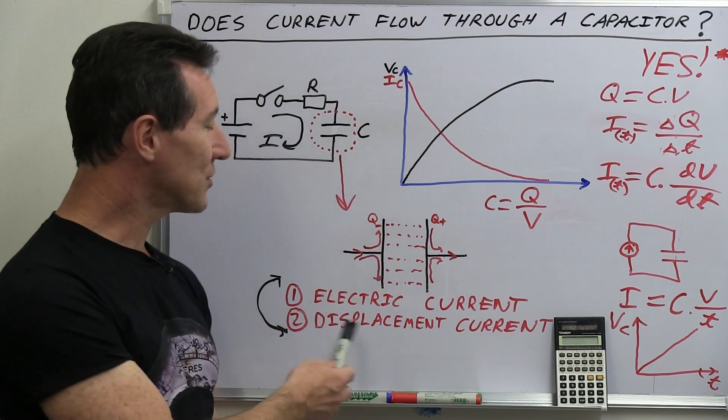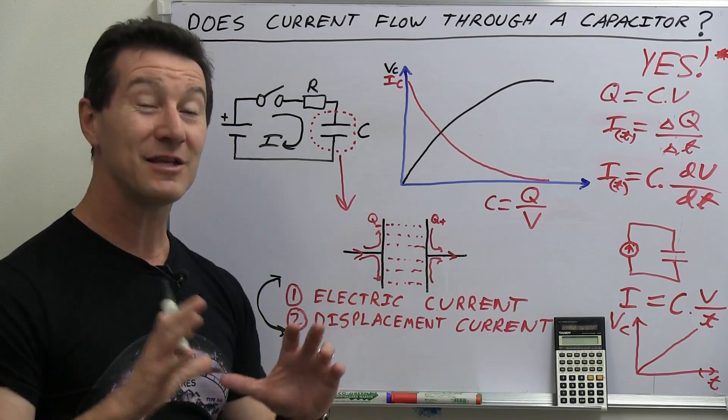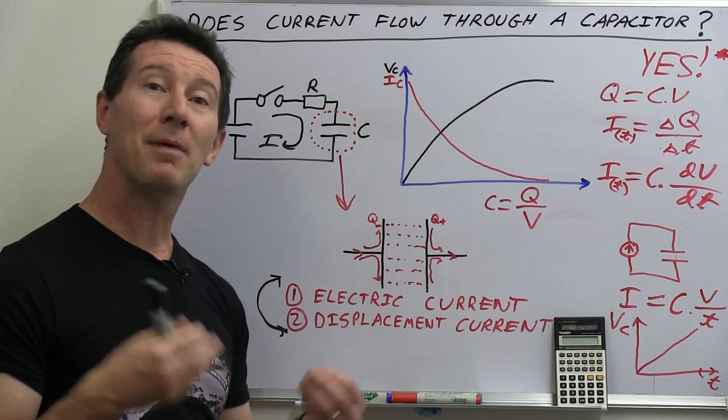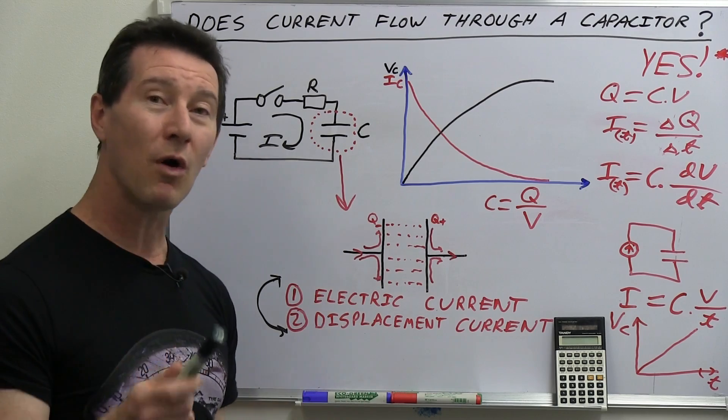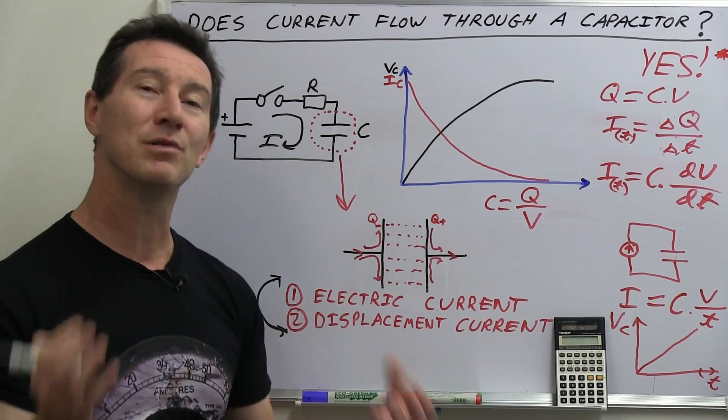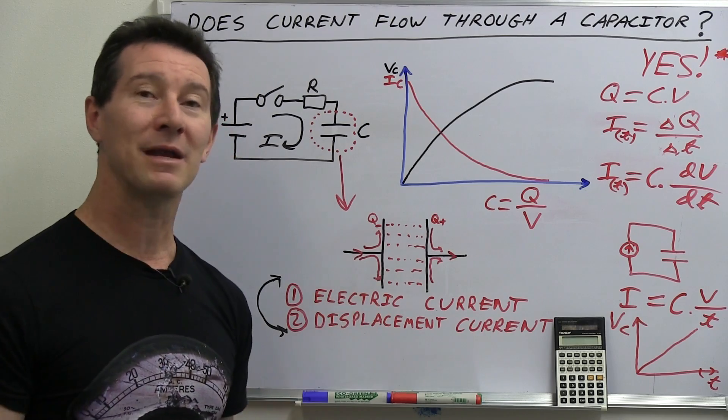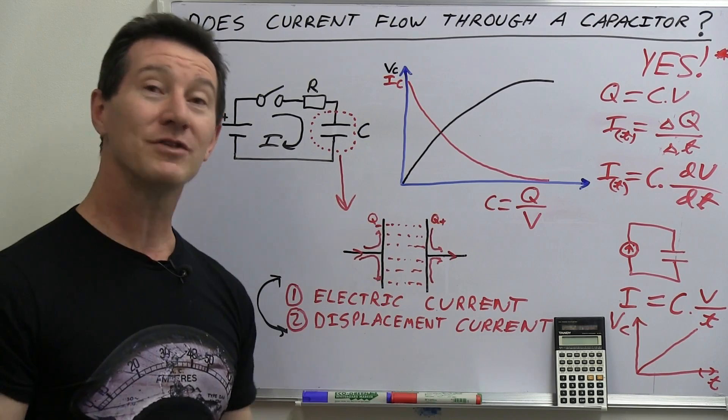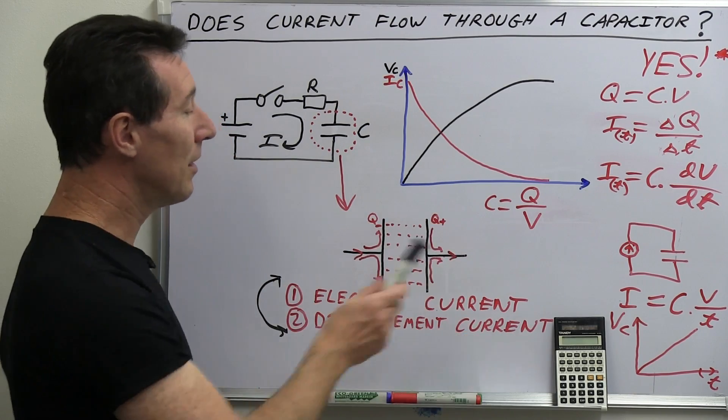So Maxwell, with this idea of the displacement current, there's many different ways to look at it and try and understand the concept. But it is a term which he came up with, which was required and is required to complete the theory of electromagnetism and electromagnetic waves and radio waves and the whole concept that we know as electromagnetism today. It's an essential part of it.